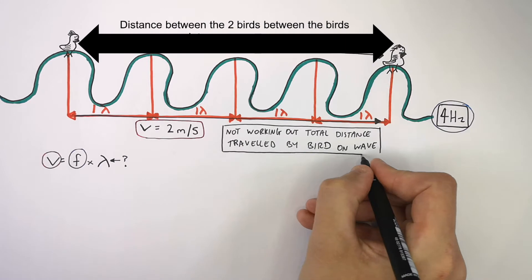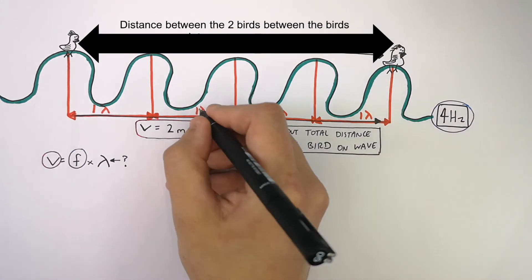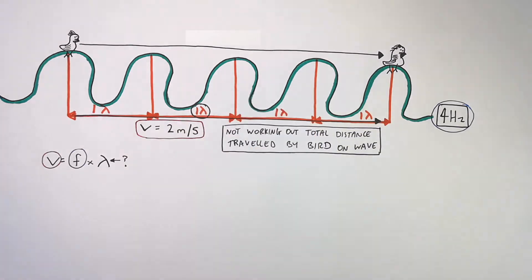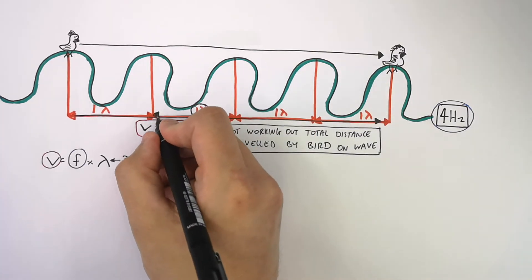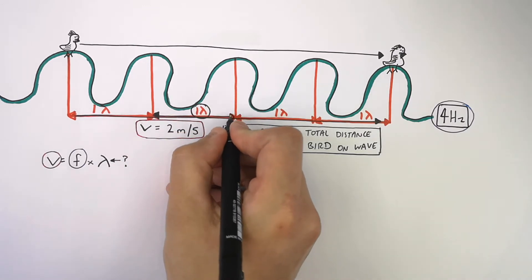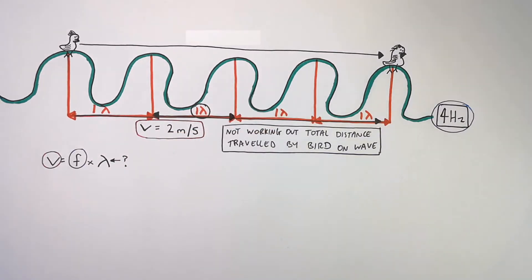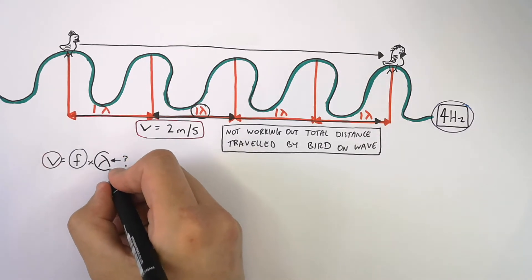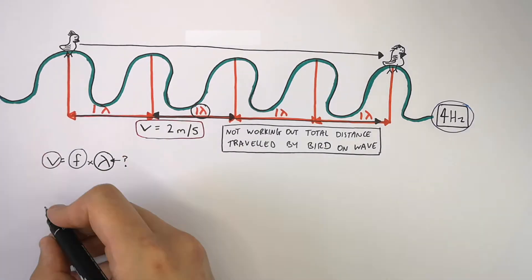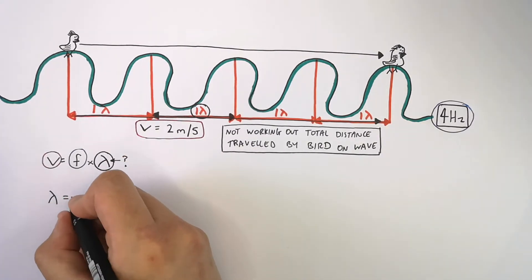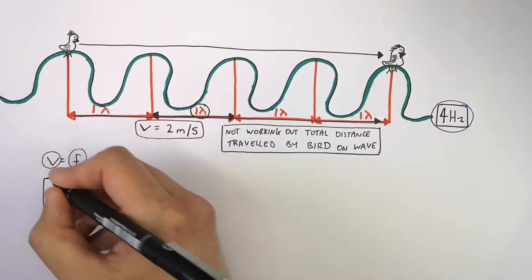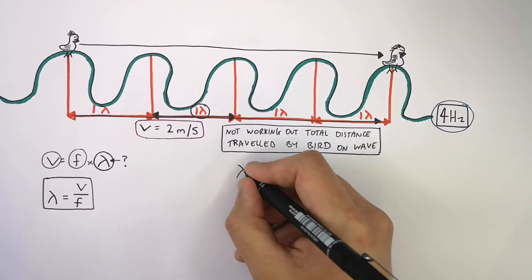Before we work out the distance the two ducks are apart, we must work out the wavelength of one wave. We've got the equation V equals F times lambda, where lambda is the wavelength. We want to make wavelength the subject, so we rearrange the equation. We now have wavelength equals wave speed divided by frequency — lambda equals V over F.